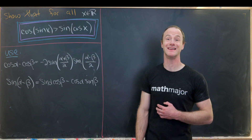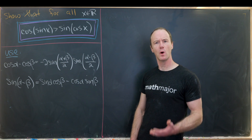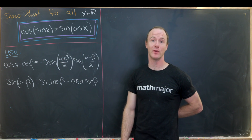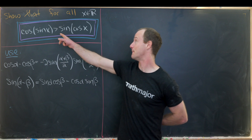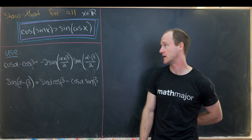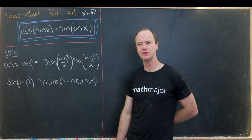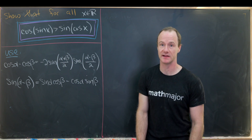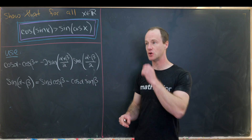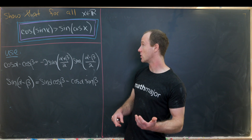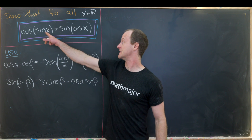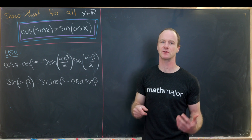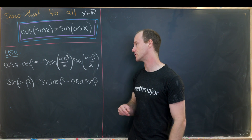Here I've got a nice viewer-suggested inequality. What we want to show is that for all real numbers x, cosine evaluated at sine x is bigger than sine evaluated at cosine x. We'll do this by trying to solve the equation where the left-hand side equals the right-hand side, see that there is no real solution, and then show that one side is bigger at some point. Since both represent continuous functions, it's always bigger by the intermediate value theorem.